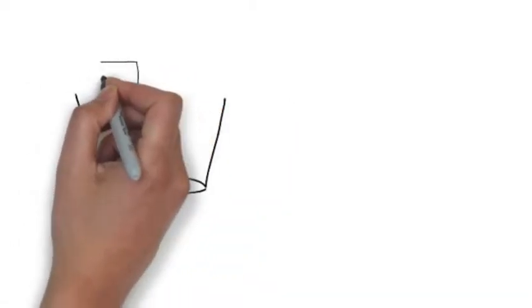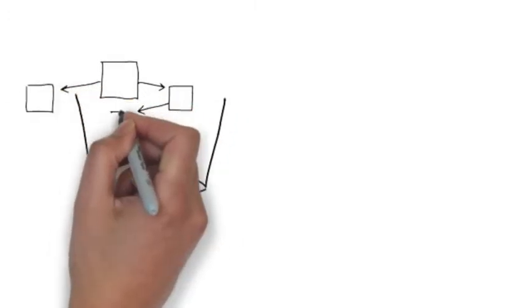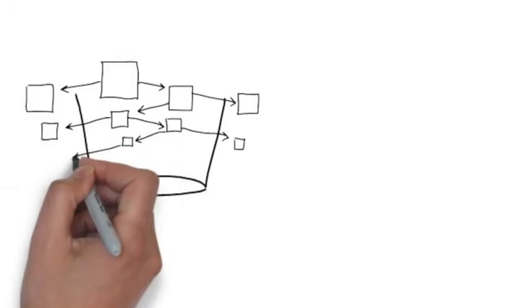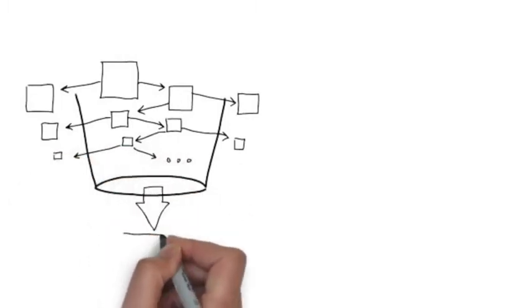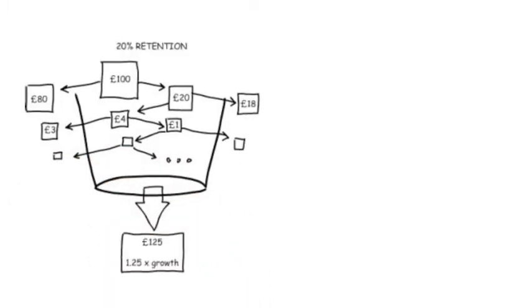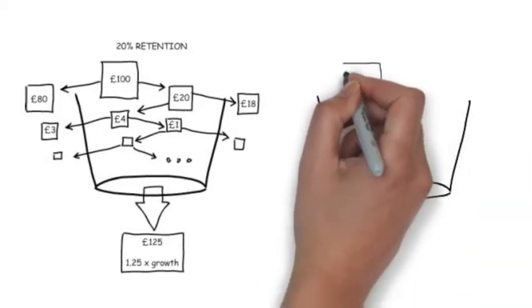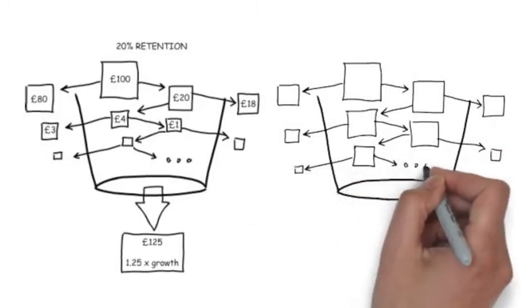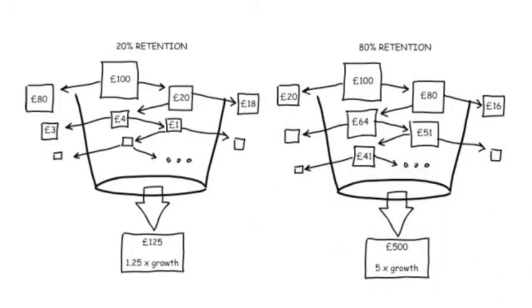And it doesn't take much local spending to see this growth. If only 20% of the community's money gets retained within the community, the total growth is 1.25 times the original amount. Compare this to 80% retention. If people spend 80% of their money locally, the community's wealth would grow 5 times.